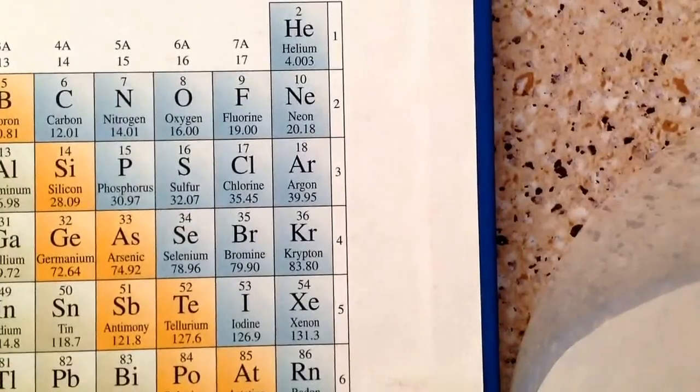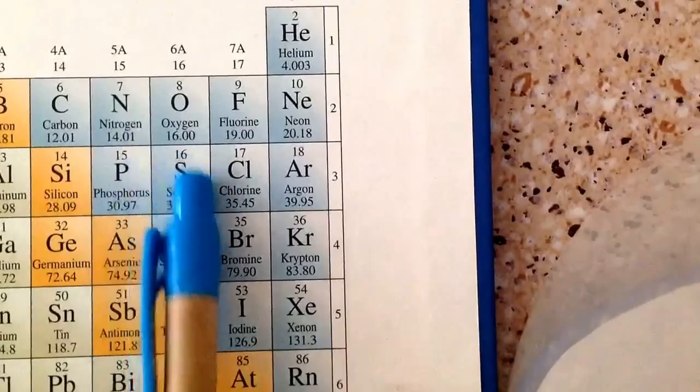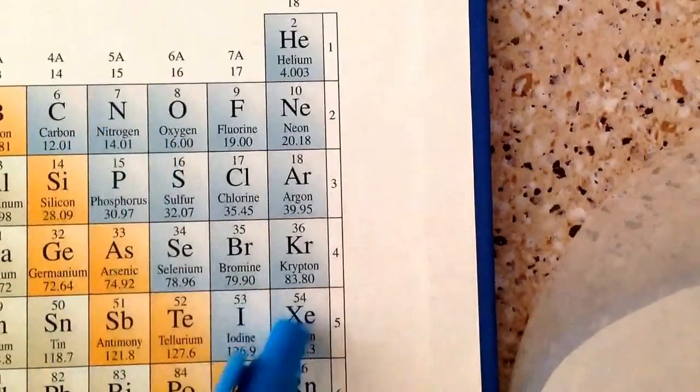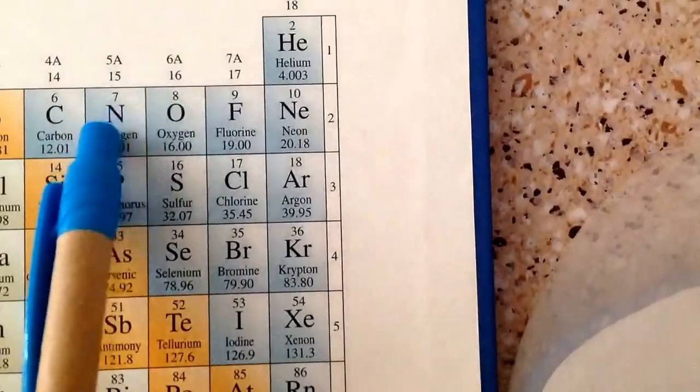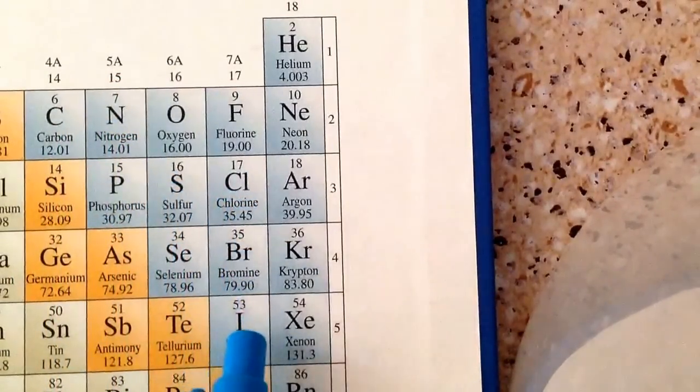An easy way to memorize the seven strong acids is that usually on a chem exam, they give you the periodic table. So you can just look at the periodic table for your strong acids. The strong acids make almost like a seven if you can see that.